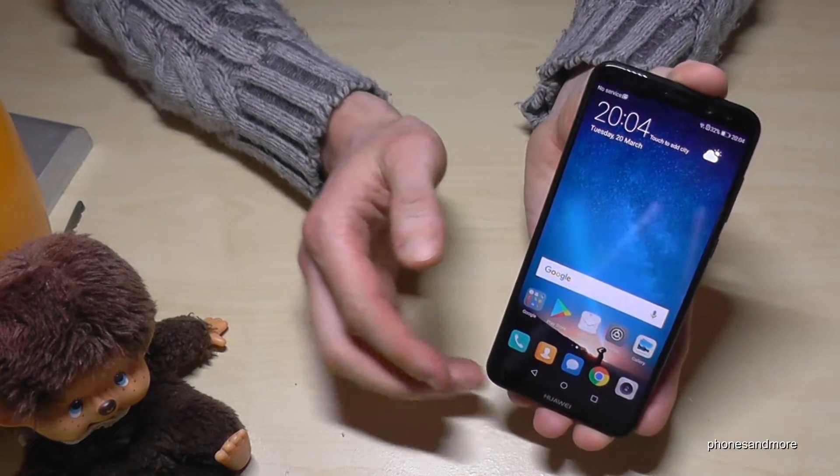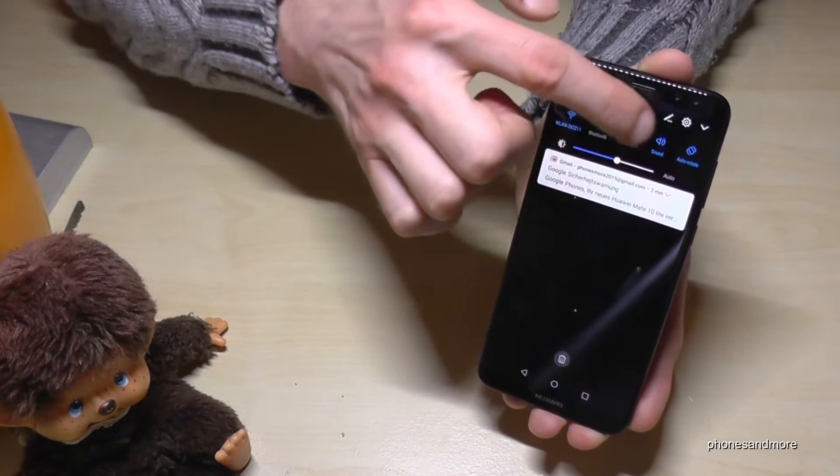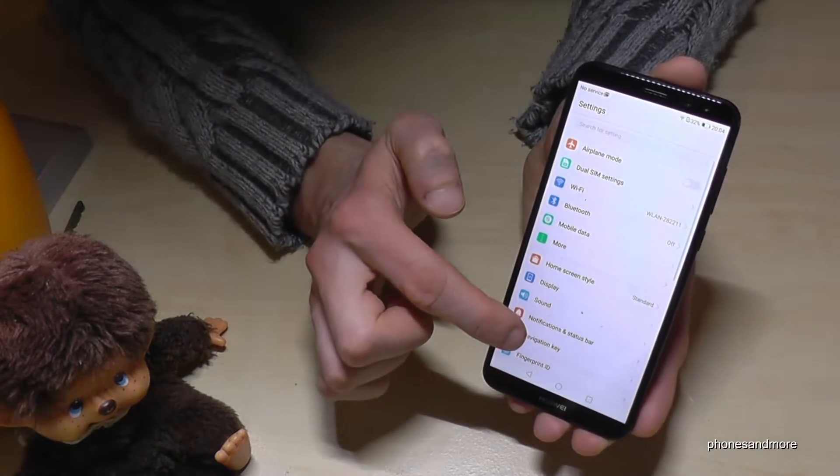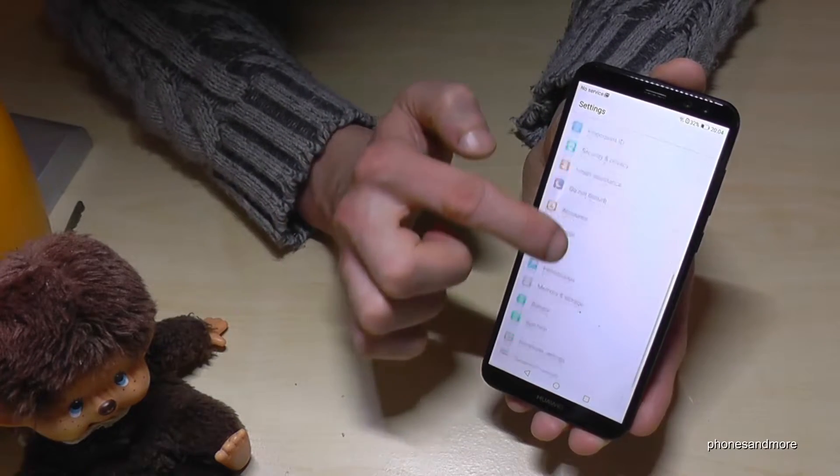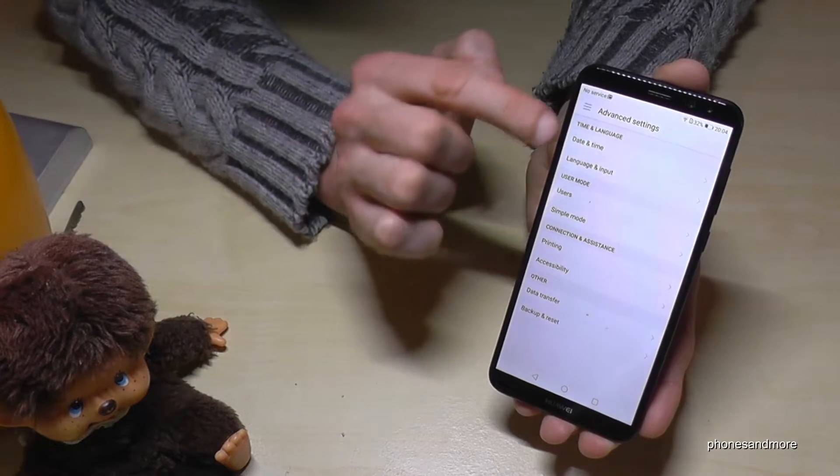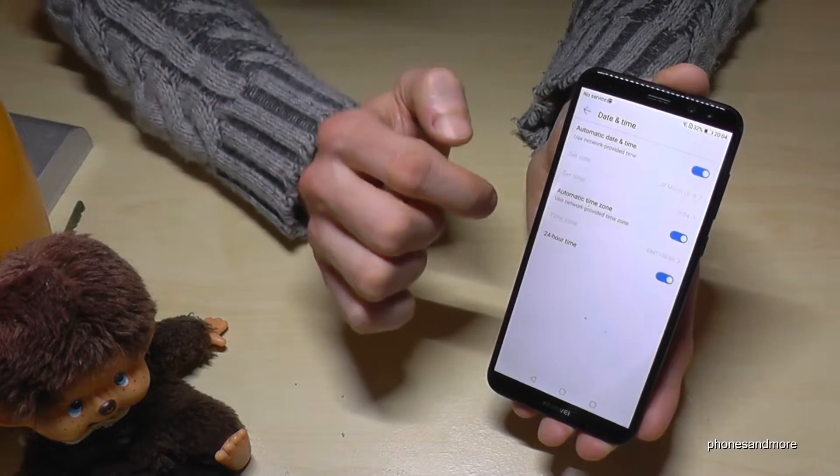First of all, we need to go to the settings. You can find the settings here or you can use this icon. Then you scroll down to advanced settings and then the first point is date and time.